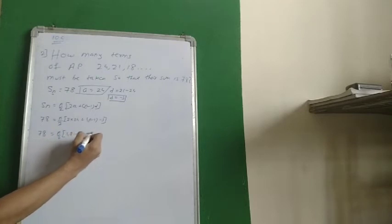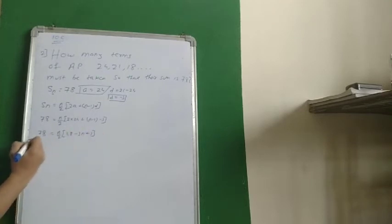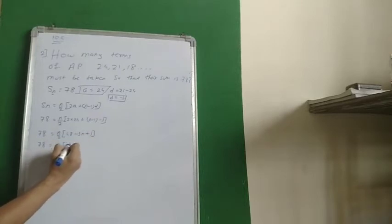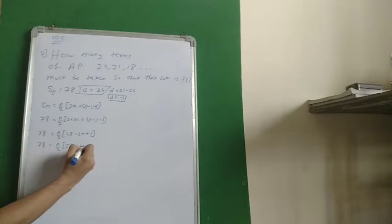So 78 is equal to N upon 2, 48 plus 3 gives me 51 minus 3N.